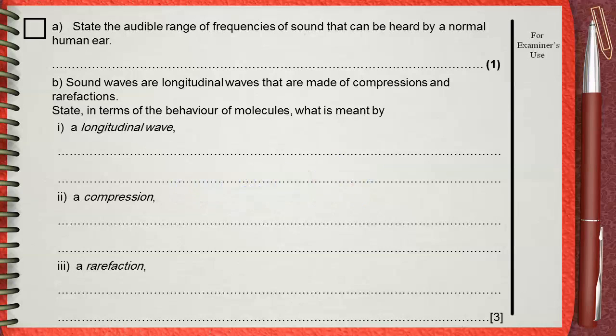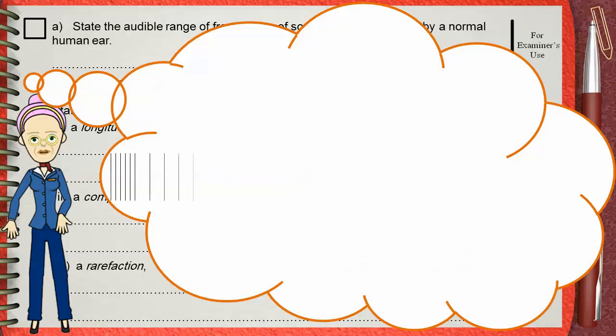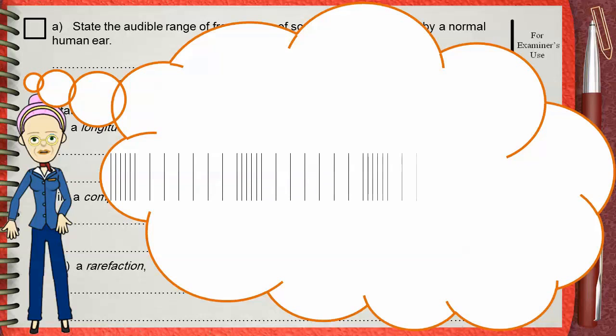So, let's remember what is a longitudinal wave. This is how we can express a longitudinal wave. Parallel lines that are close to each other in some regions and away from each other in other regions.